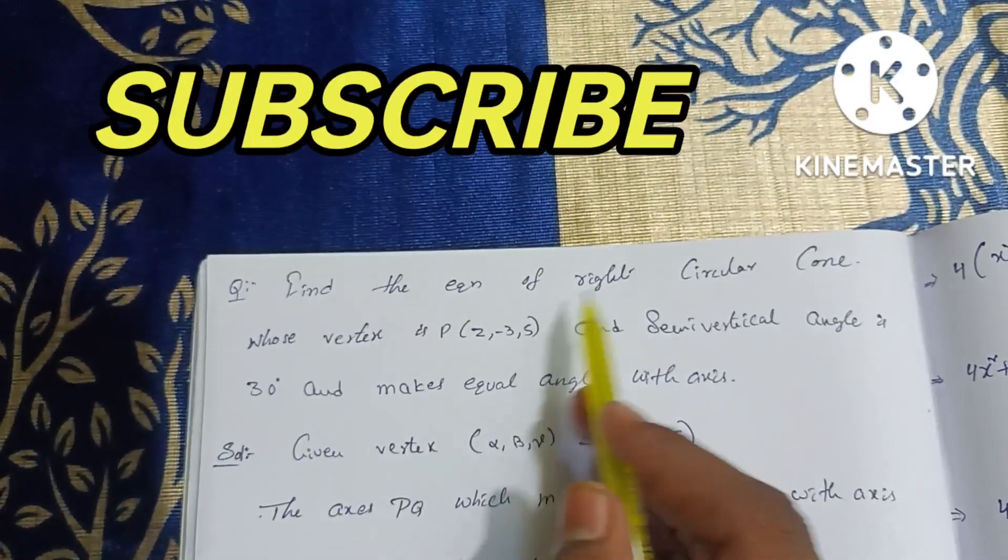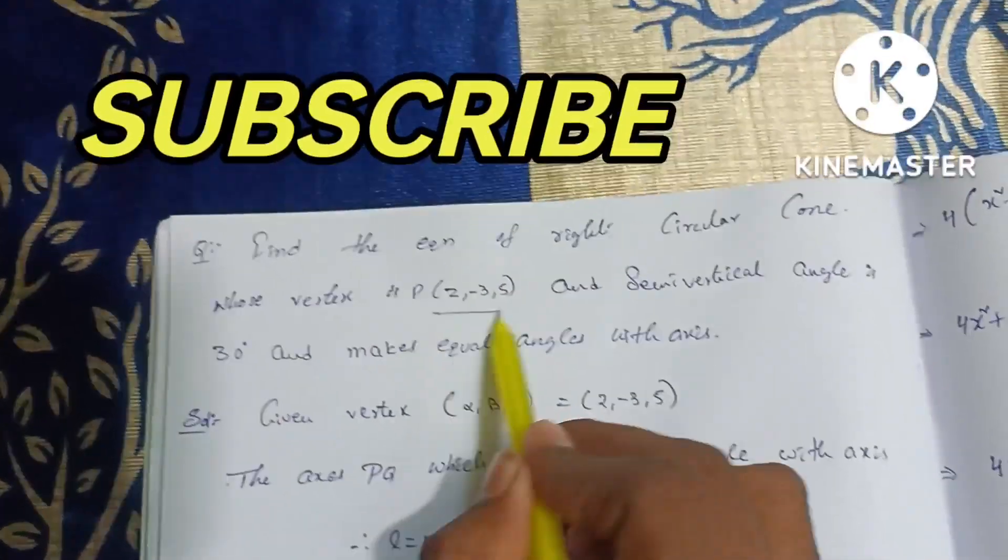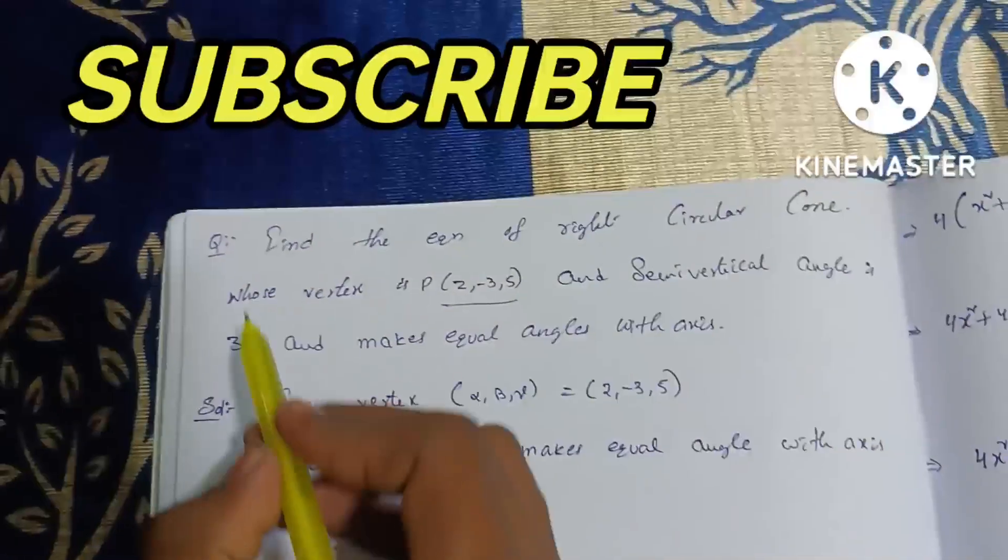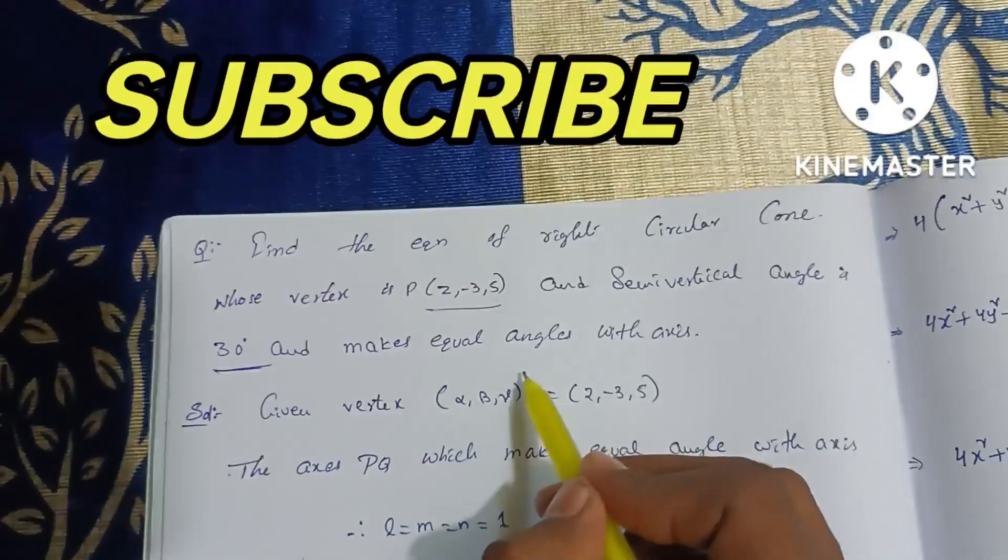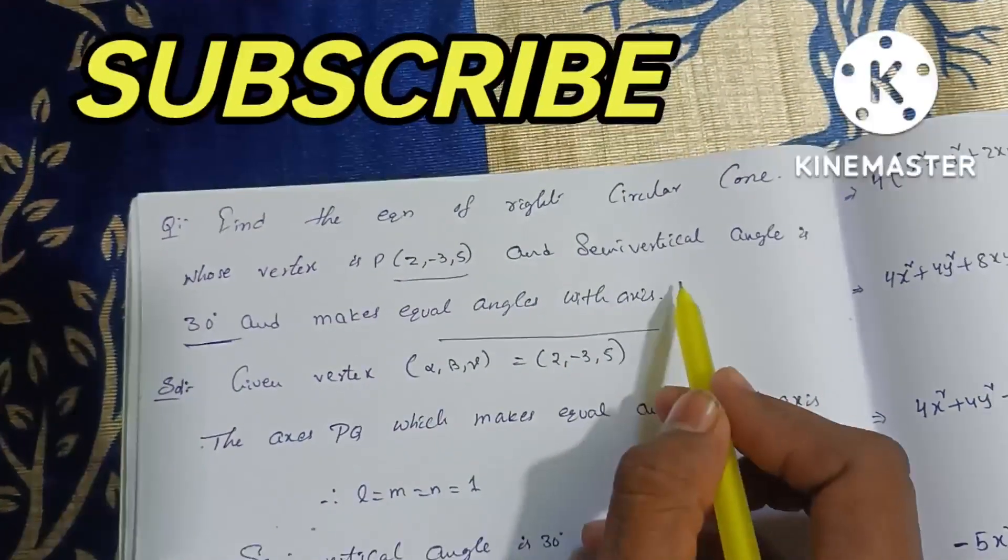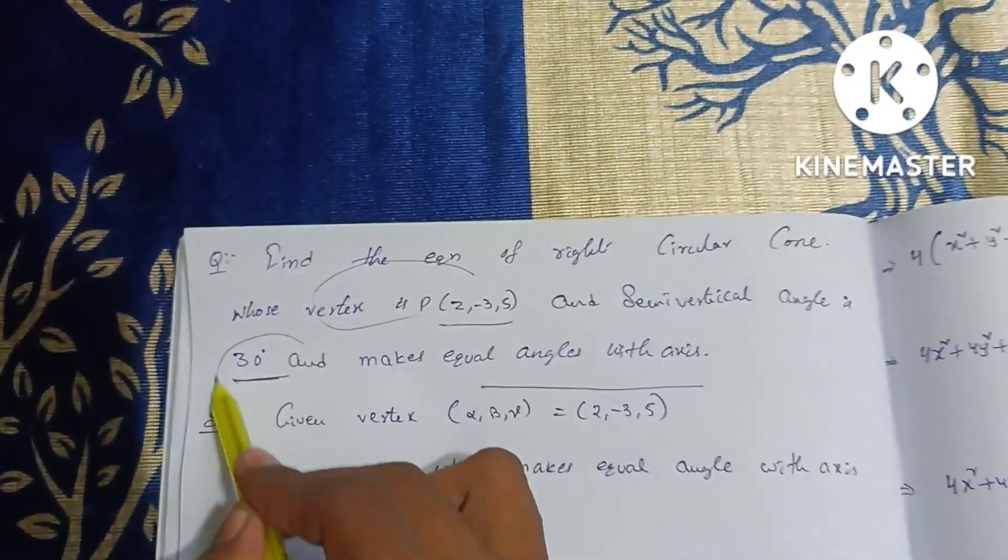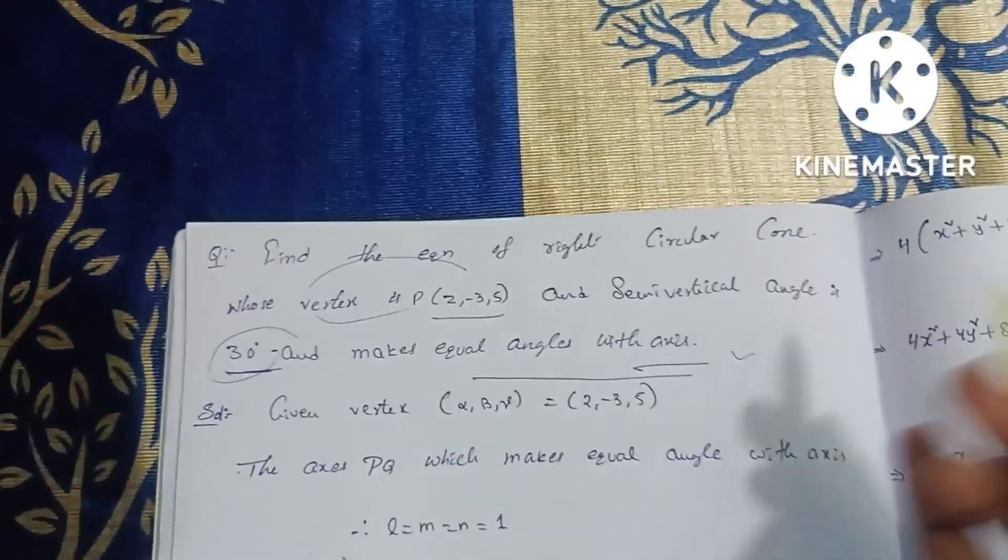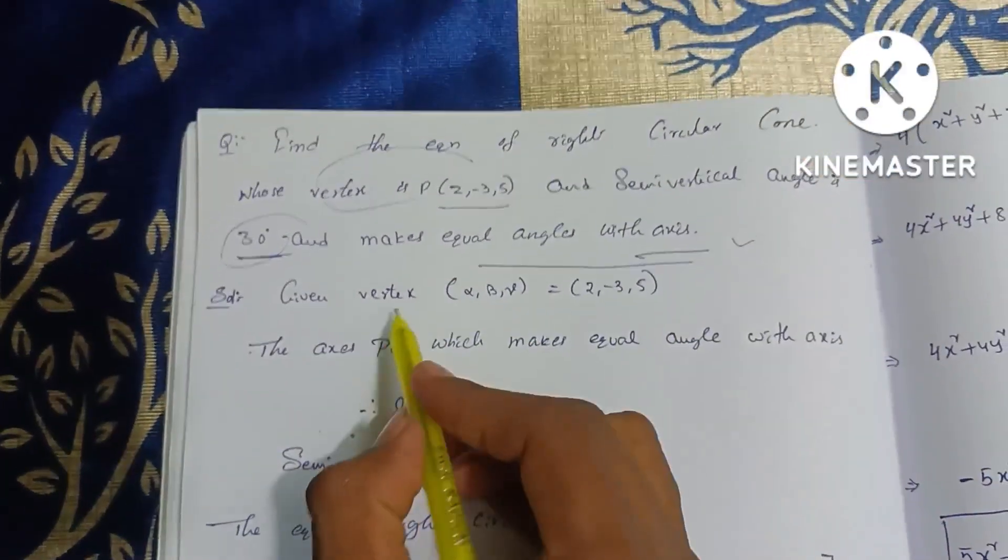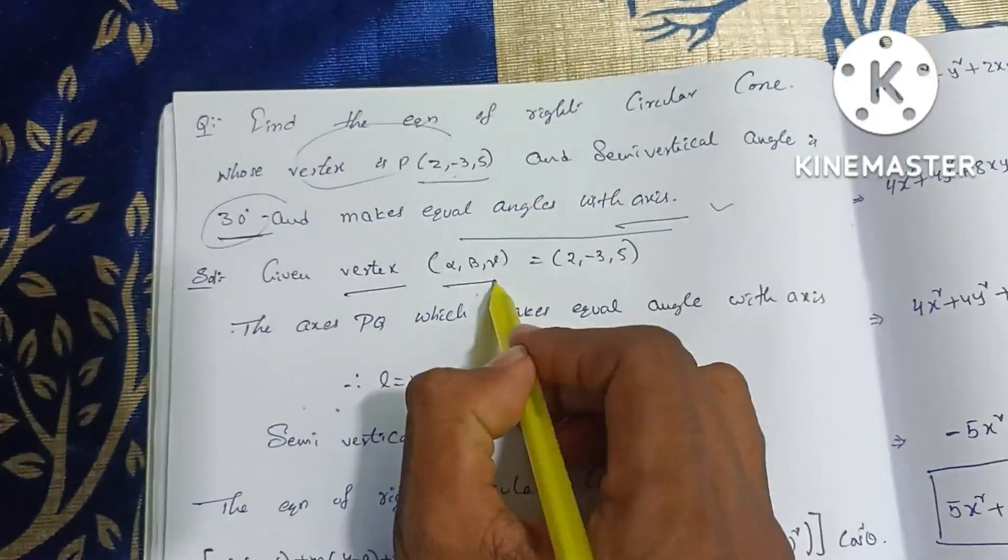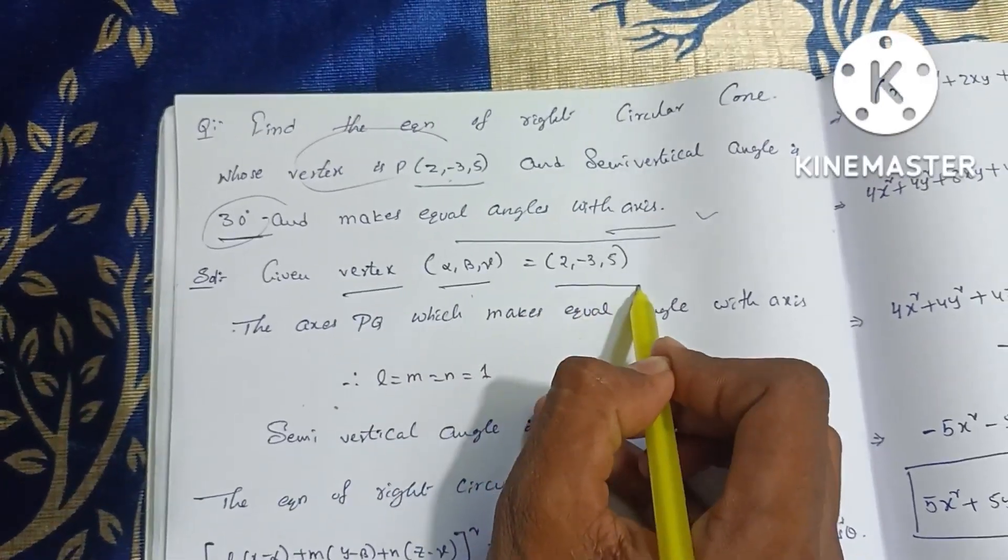Question: find the equation of right circular cone whose vertex and the semi-vertical angle makes equal angle with the axis. So this problem is given vertex alpha, beta, gamma is 2, 3, 5.